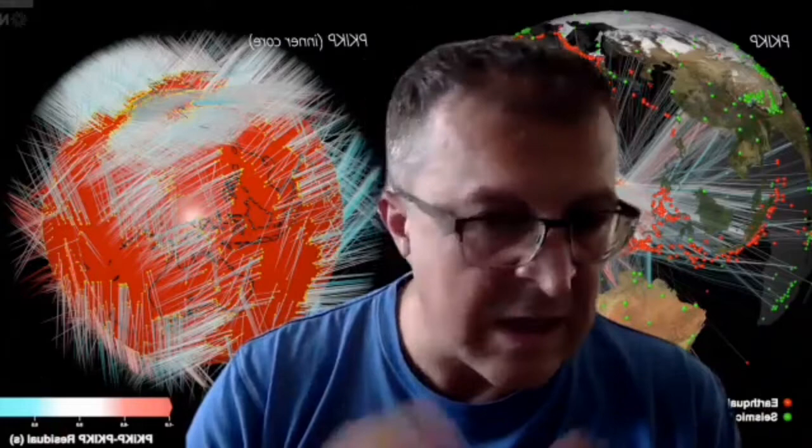with some other lighter elements that are still being discussed and debated. When the solid inner core solidifies, that generates a lot of heat, and these light elements are released into the volume of the liquid outer core, and that gives rise, along with the rotation of the Earth, to the geomagnetic field.